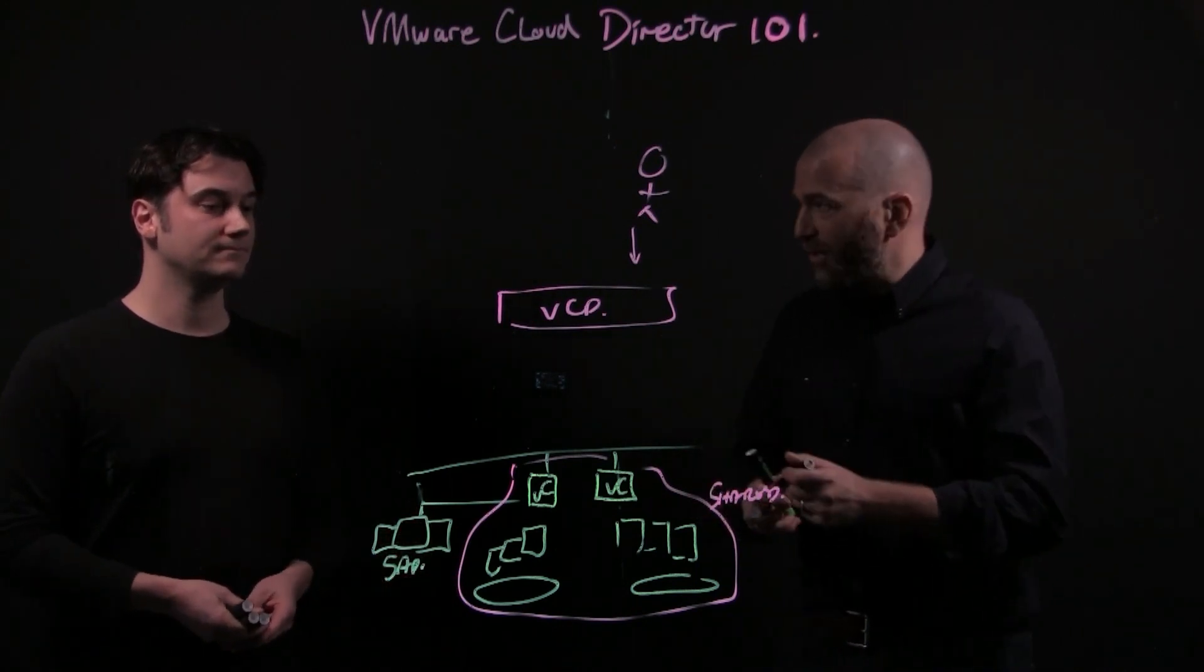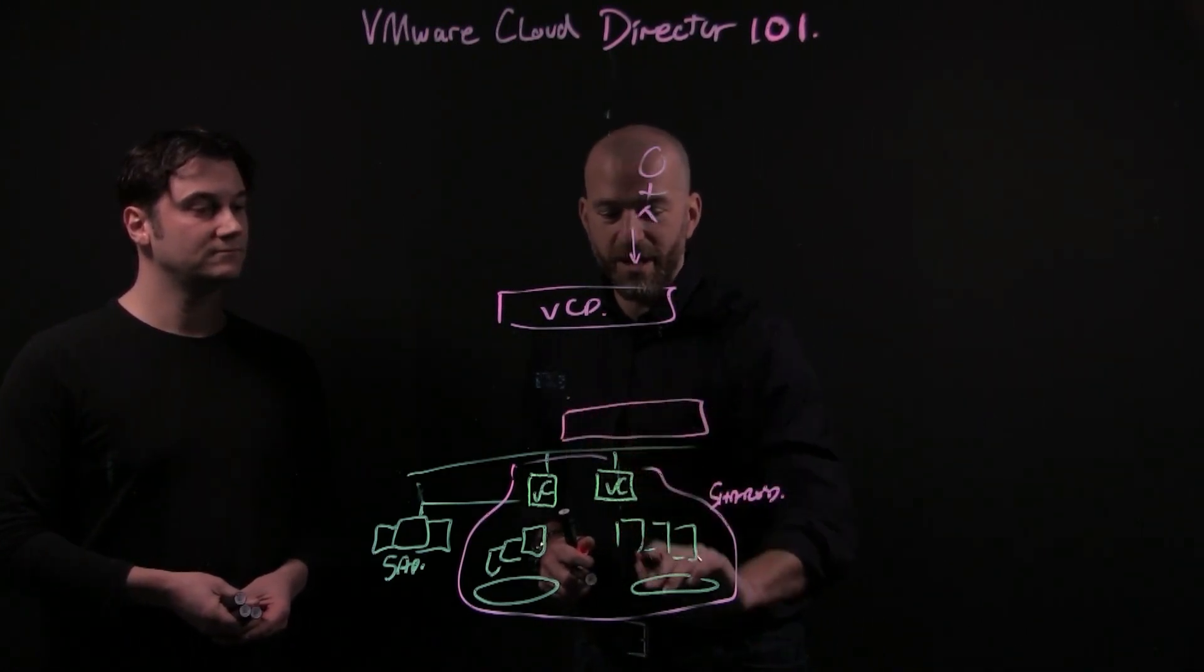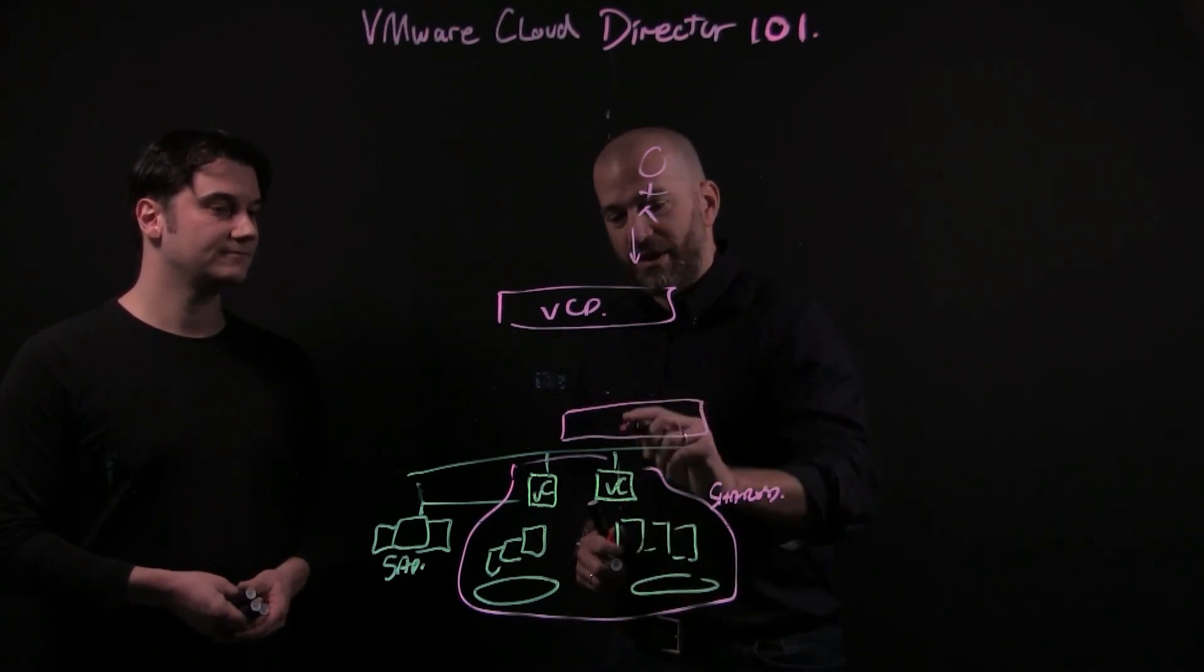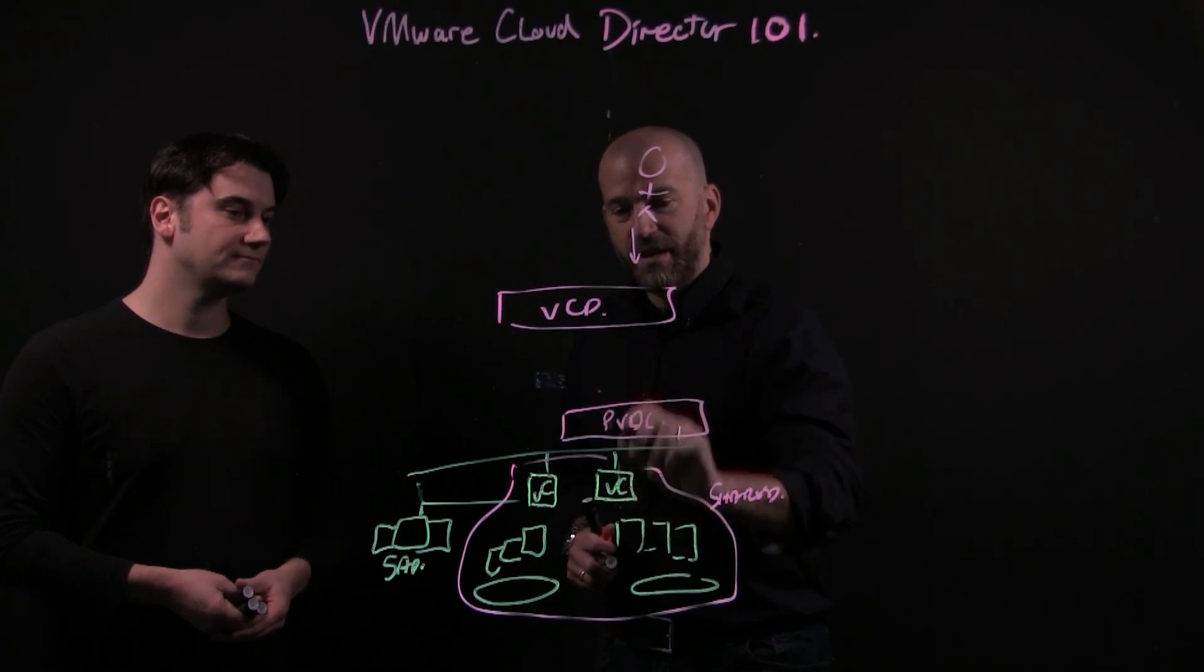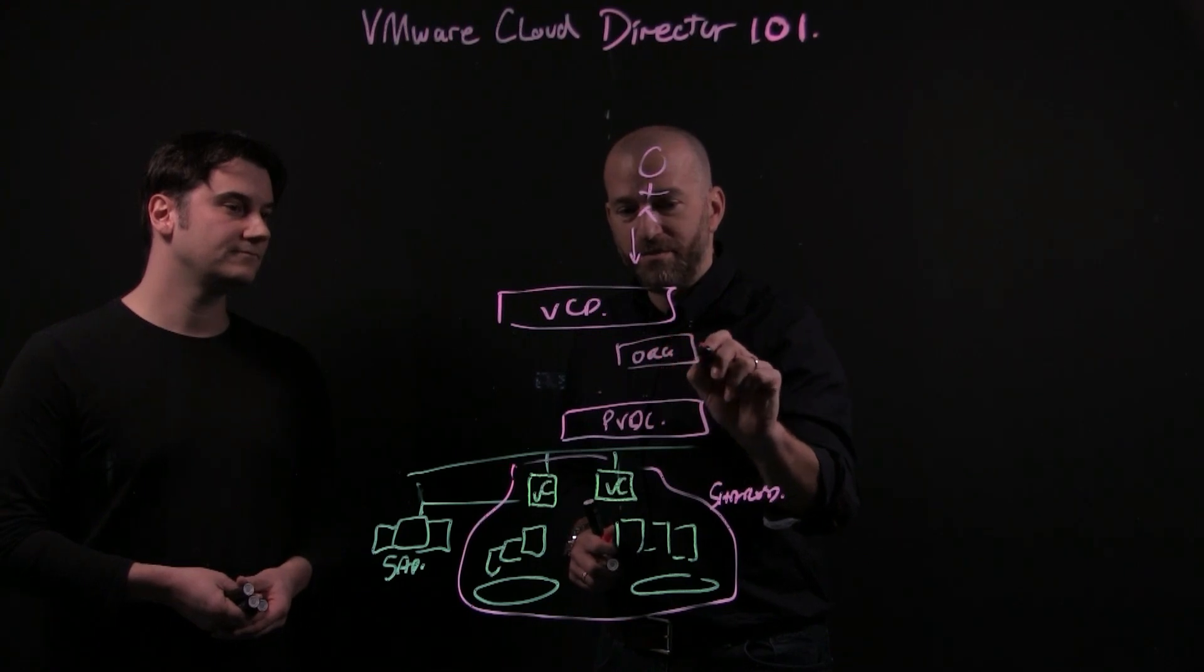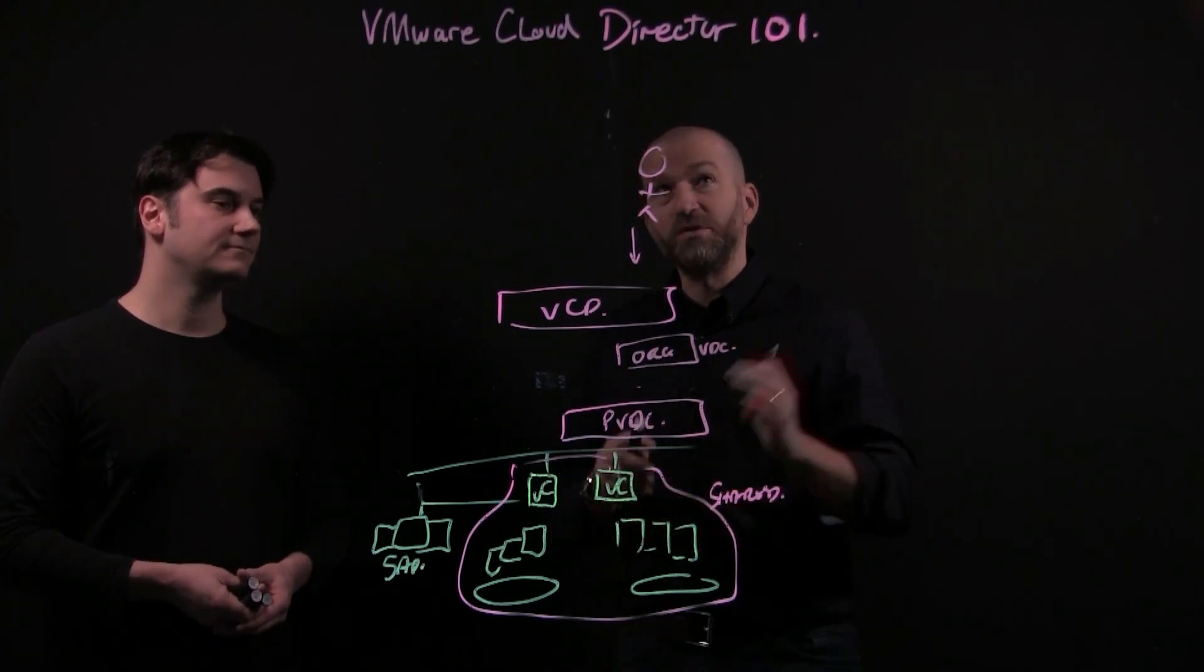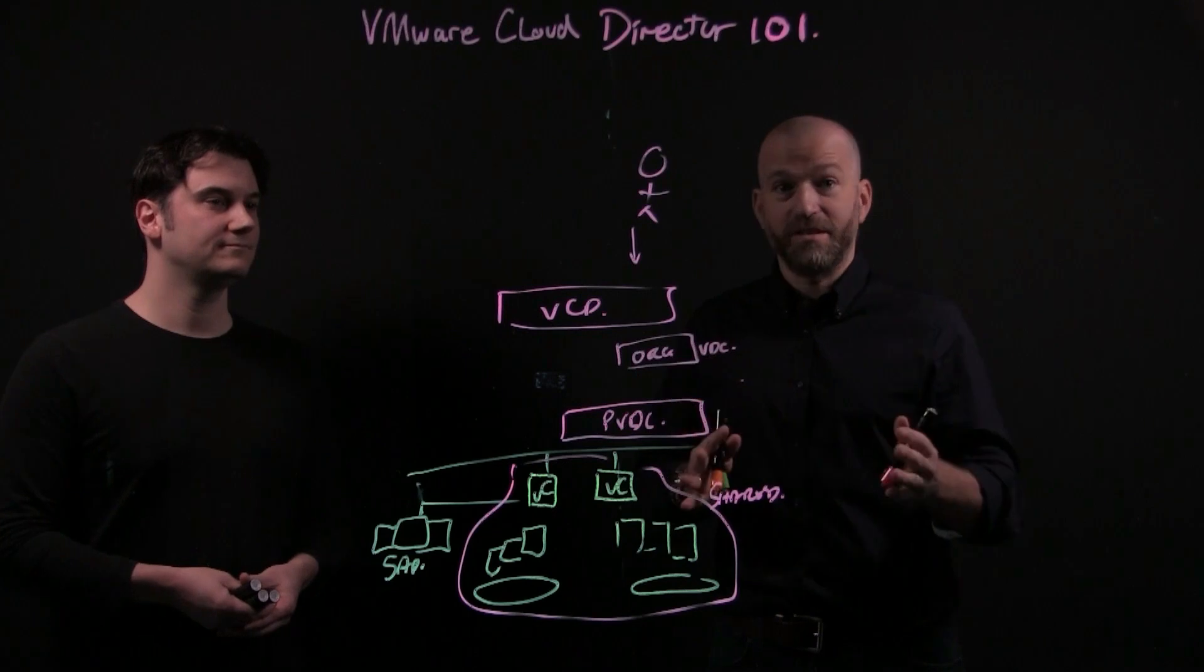So another important point here. We have the resource pools configured in vCenter, pulling that resource up into a provider virtual data center, and then carving that up into multiple organization VDCs, virtual data centers for tenants then to consume. And that's one model. We're going to talk about allocation models and reservations in the next session.